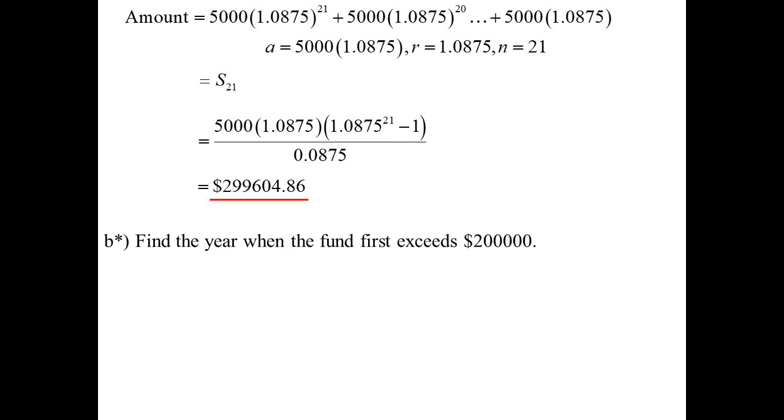Now, this next part wasn't actually in the HSC. I've just added it here. What if we wanted to find a particular year? So we want to know when did we exceed $200,000 for the first time? How long did that take? So I write out my series again, but this time I don't know how many years. So I don't know how long that first investment is. I know the last investment will be in there for one year. The second last one will be in there for two years and so on and so on. But I don't know how many years that first one is. So I'll just say it's in there for N years. So it's sum to N.